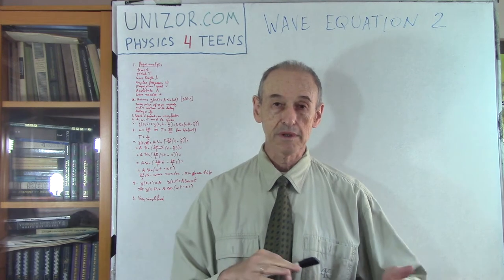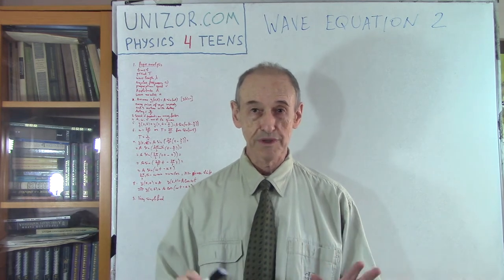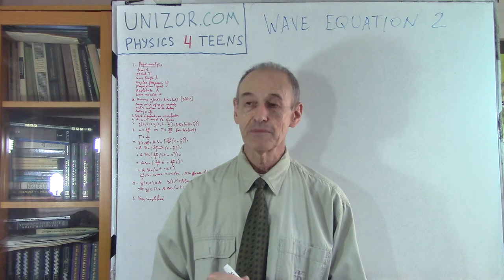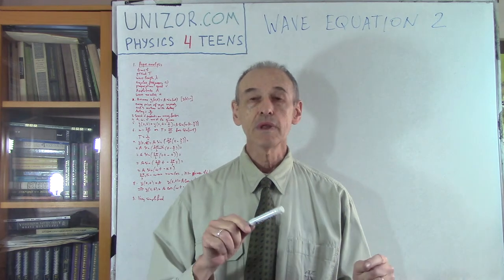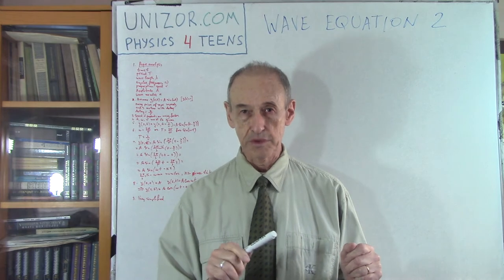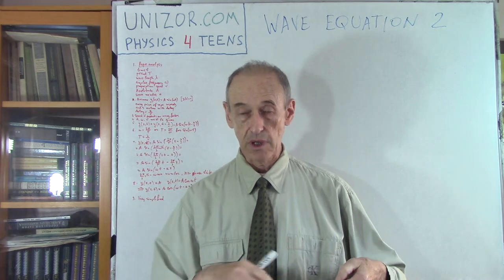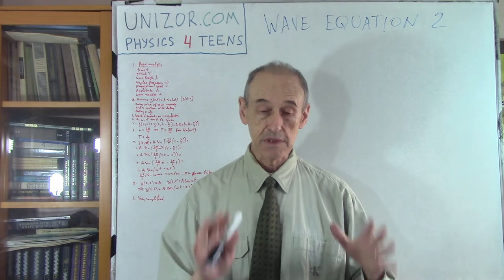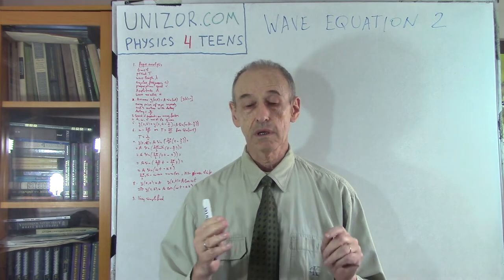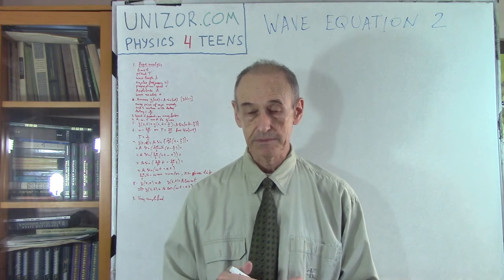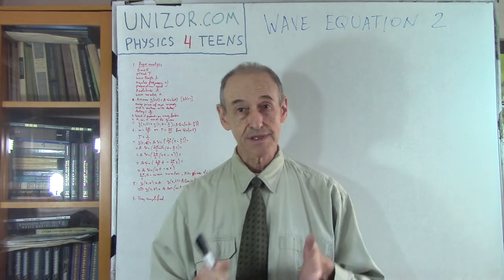This lecture will further simplify our model — and we are talking about a model, not reality. Reality is always much more complex. We will consider a model of this ideal rope which does not have this small horizontal movement. It has only up and down movement, and each segment basically repeats the movement of the driving end of the rope. This is a simplified model of transversal oscillations, and it's a continuation of the previous lecture.